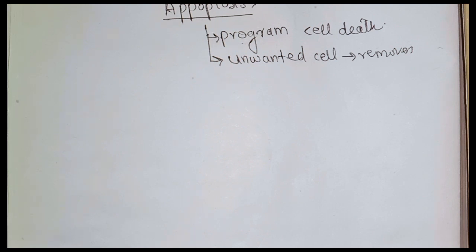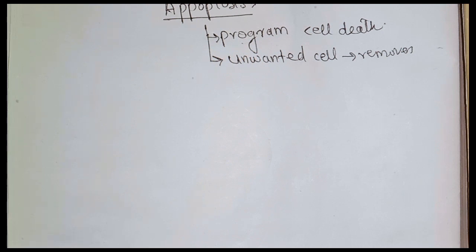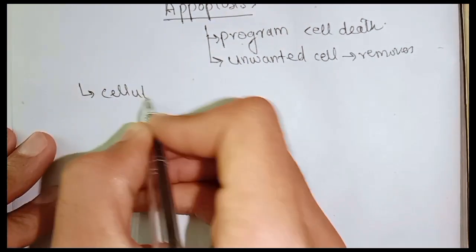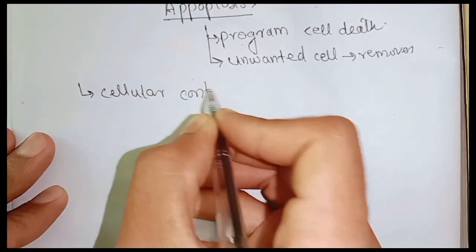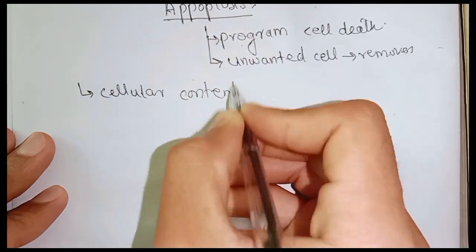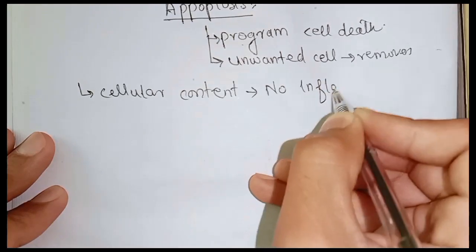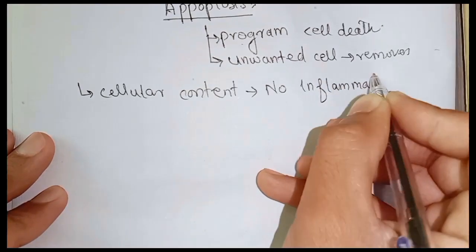In apoptosis there is no inflammation — the cellular contents are not released into the body. Unlike necrosis, the cell does not spill its contents into the surrounding cytoplasm or endoplasmic reticulum. This means there is no inflammation and no resulting disease from the process.